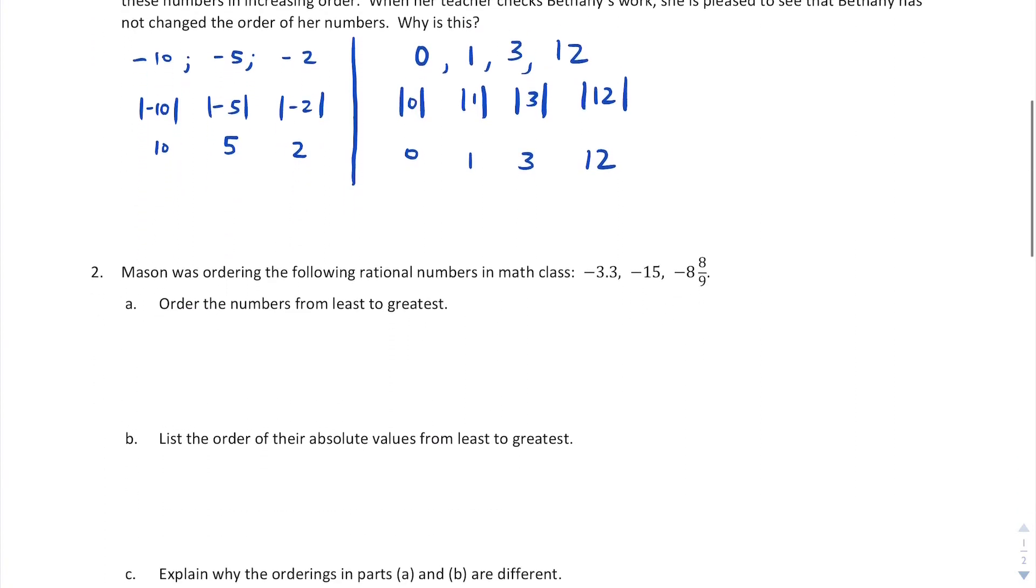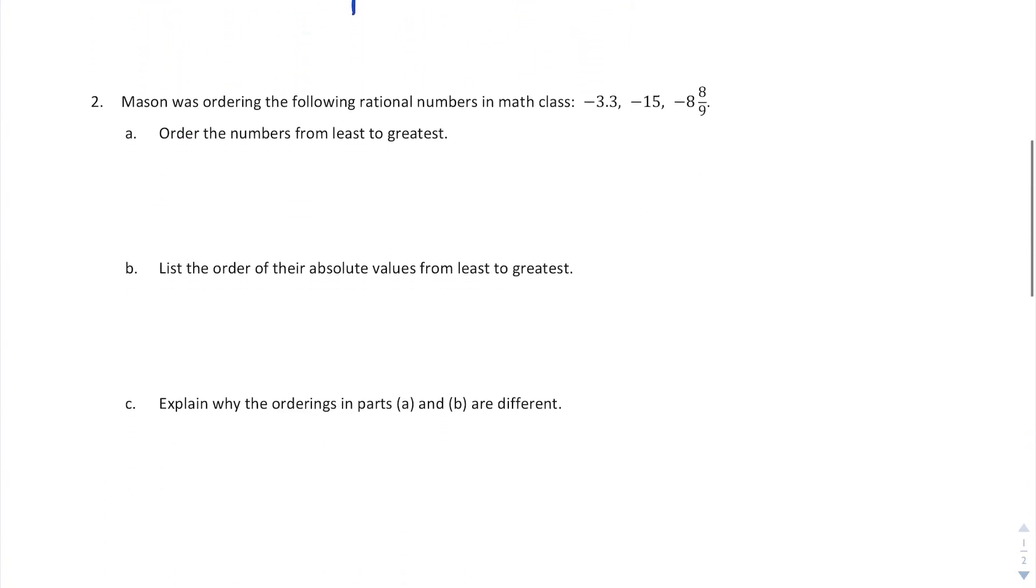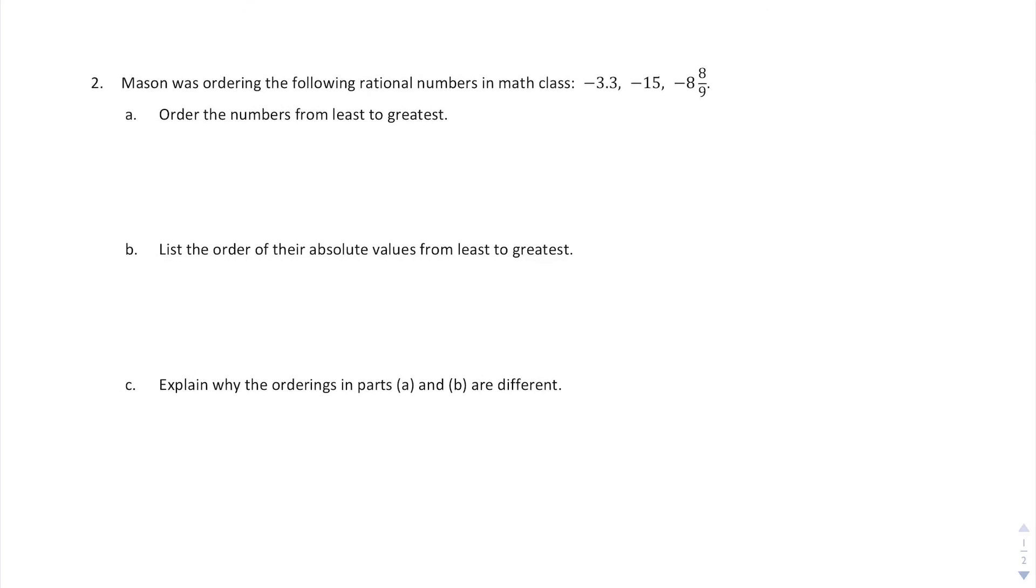Question number two kind of gets to that counterpoint that I mentioned. Mason was ordering the following rational numbers in math class. First of all, let's list these in order from least to greatest. So the number that appears to be the greatest, it in fact has the largest absolute value, is negative 15, followed by negative 8 and 8 ninths, followed by negative 3.3. If we imagine these numbers on a number line, this is the order they would be on the number line from left to right.